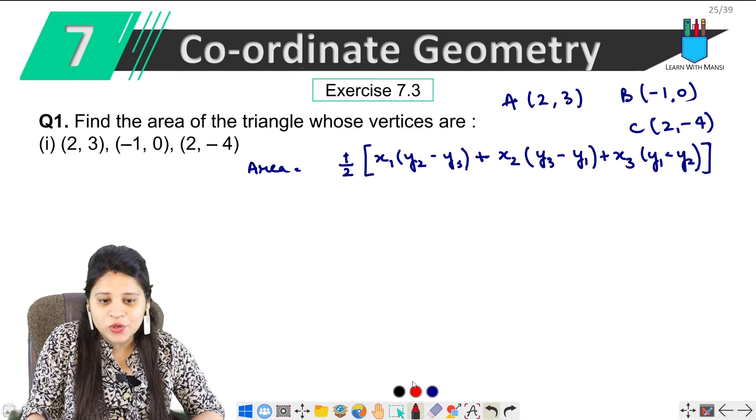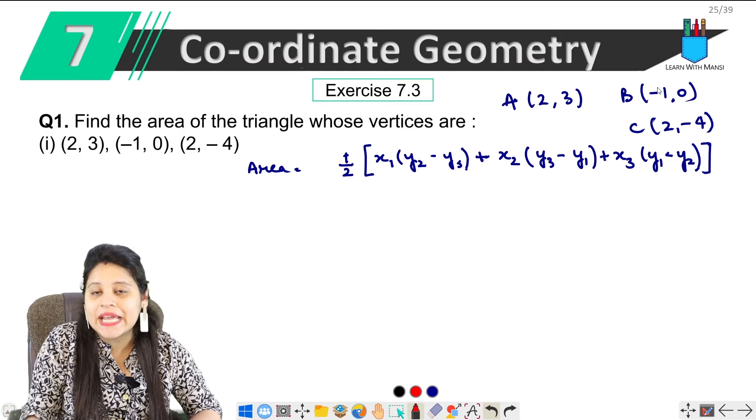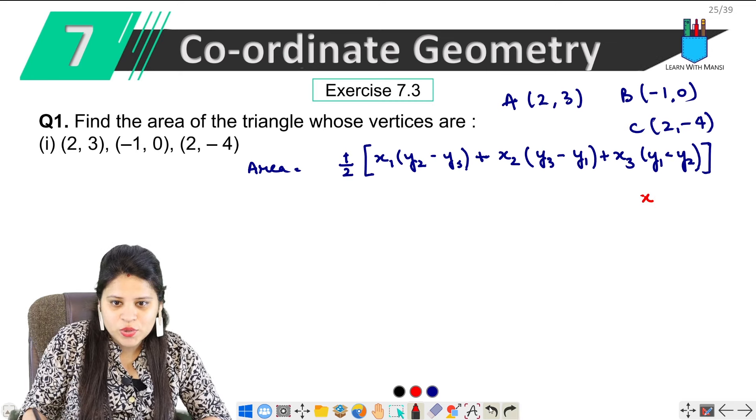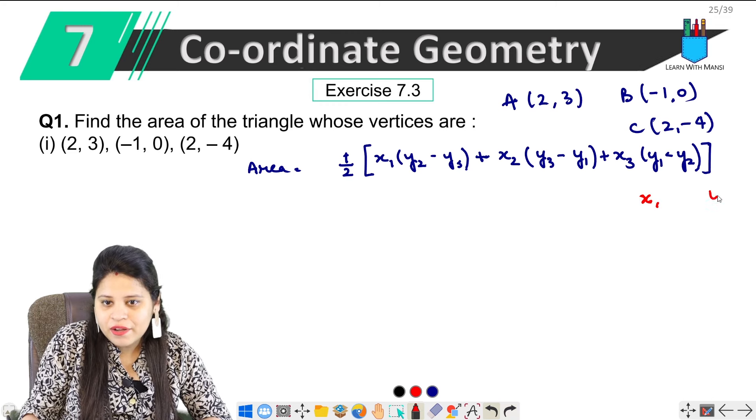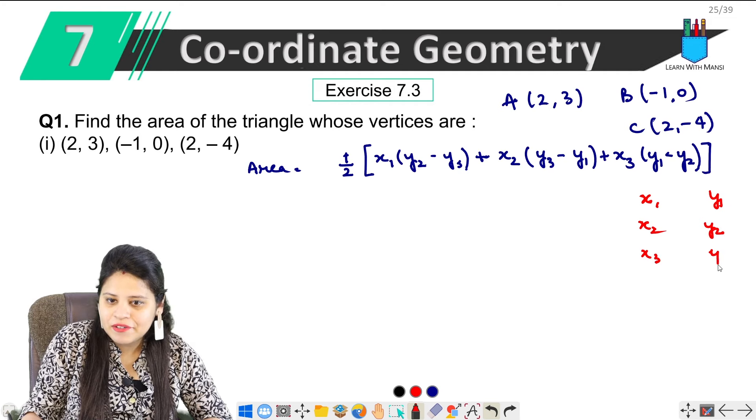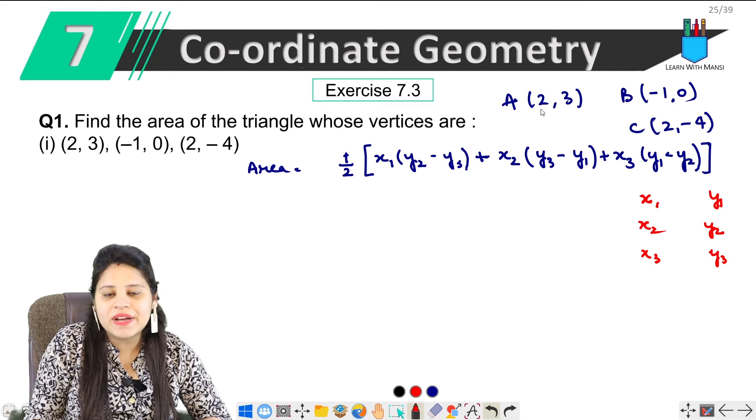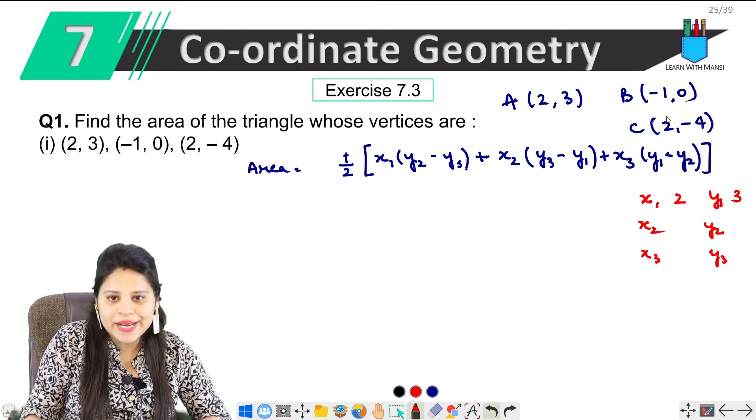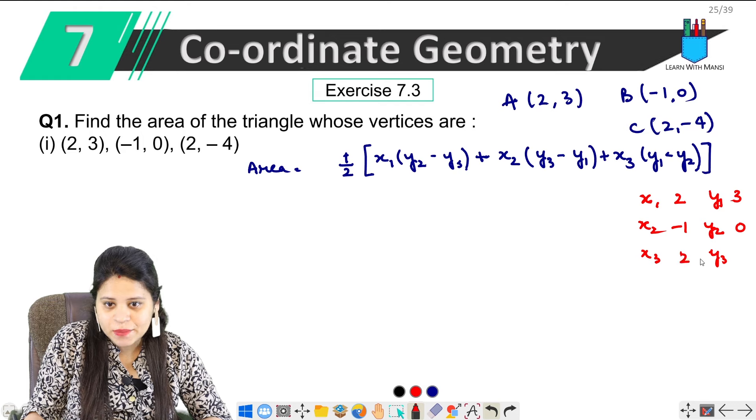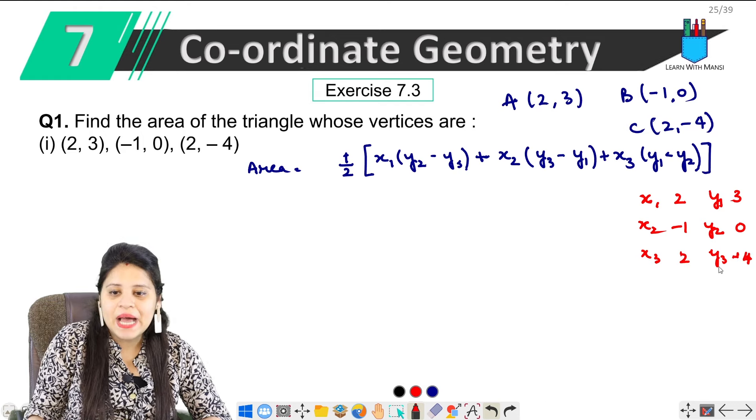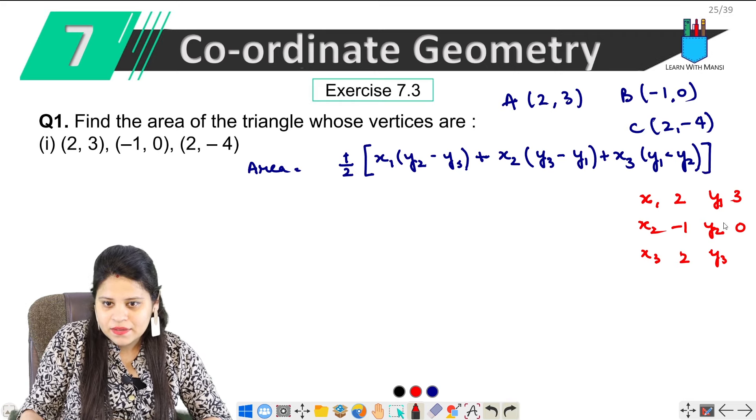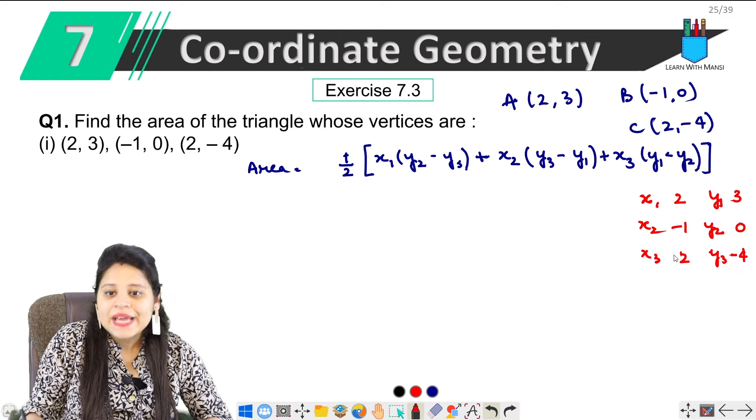Now, let's put all the values here. Don't do it in your head. Let's take x1 and write these values so that it doesn't go wrong. So, x1, y1, x2, y2, then x3, y3. The values are x1, y1 - A's coordinates mean 2 and 3. x2, y2 - B's coordinates mean minus 1, 0. x3, y3 - C's coordinates mean 2, minus 4. So now all the values are here. Now, we just put it in the formula.